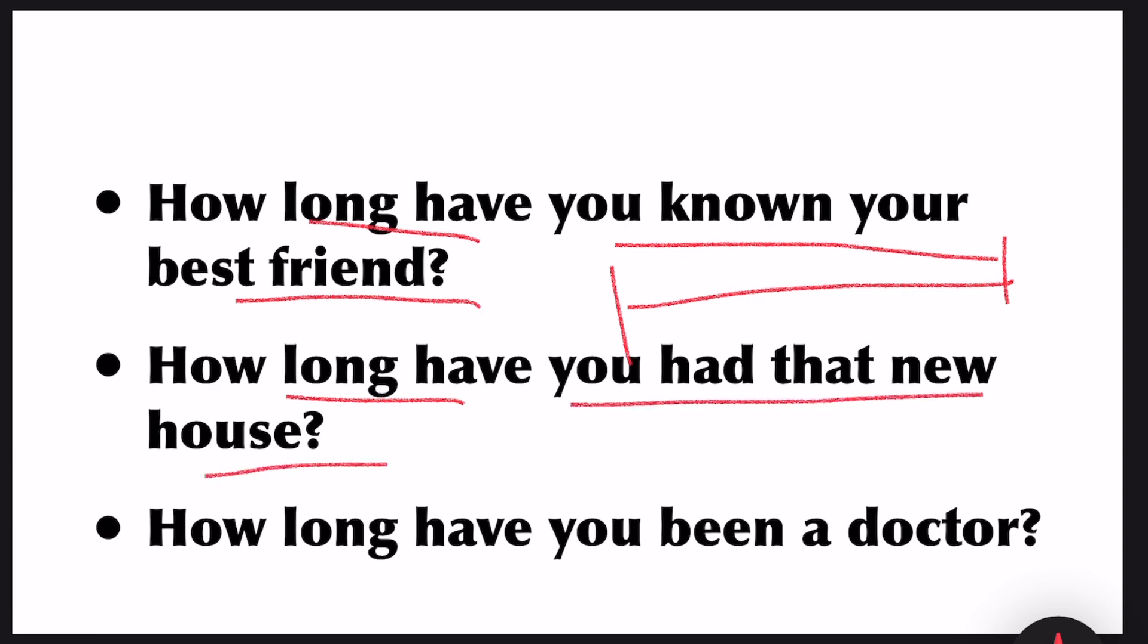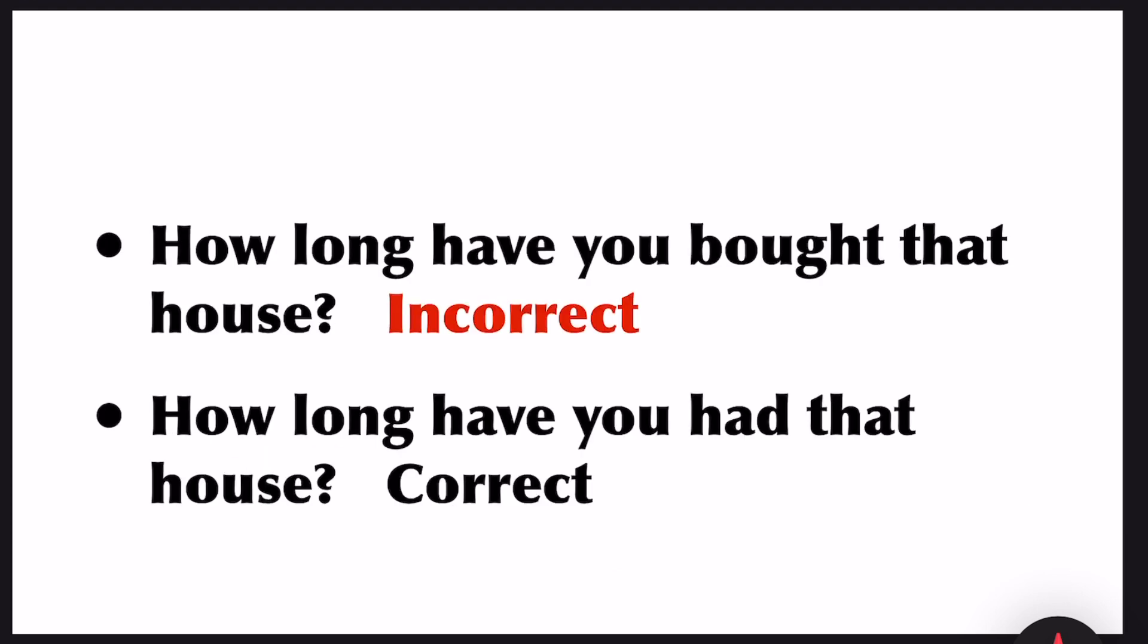How long have you had that new house? How long have you been a doctor? Here, how long have you bought that house? We have used the word bought here. This is not the right sentence, but you have to use how long have you had that house.